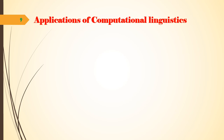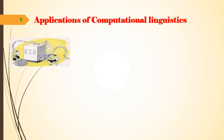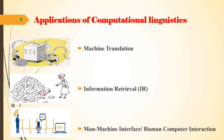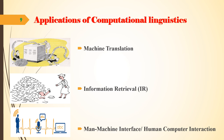Applications of computational linguistics: three important applications are machine translation, information retrieval, and man-machine interface or human-computer interaction. Machine translation is the process of translating a text document from one language to another. The three levels of machine translation are: analysis of the source language, mapping from source language to target language, and generating the target language.